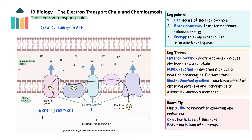The intermembrane space is a narrow, compartmentalised region which allows a high concentration of protons to build up rapidly. The pumping of protons sets up an electrochemical gradient, with a higher concentration of protons in the intermembrane space compared to the matrix or stroma. This electrochemical gradient is important for the process of chemiosmosis, which is when ATP is produced.